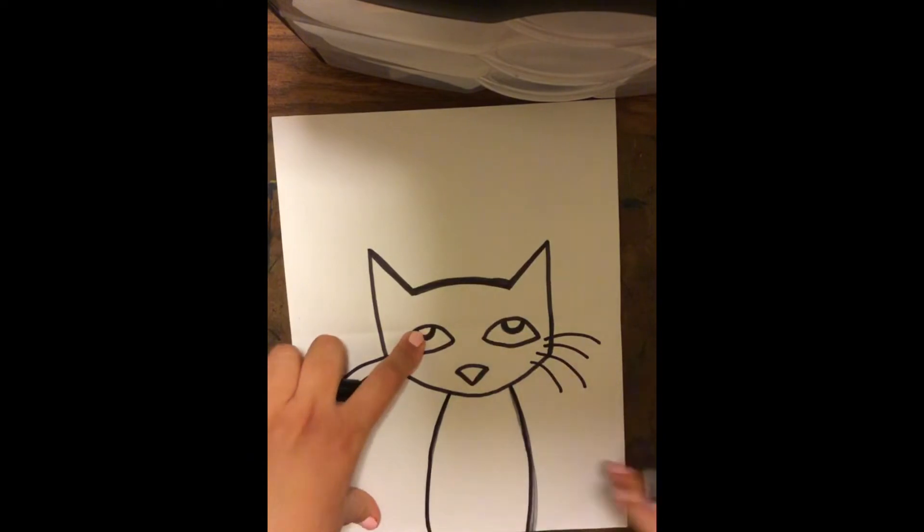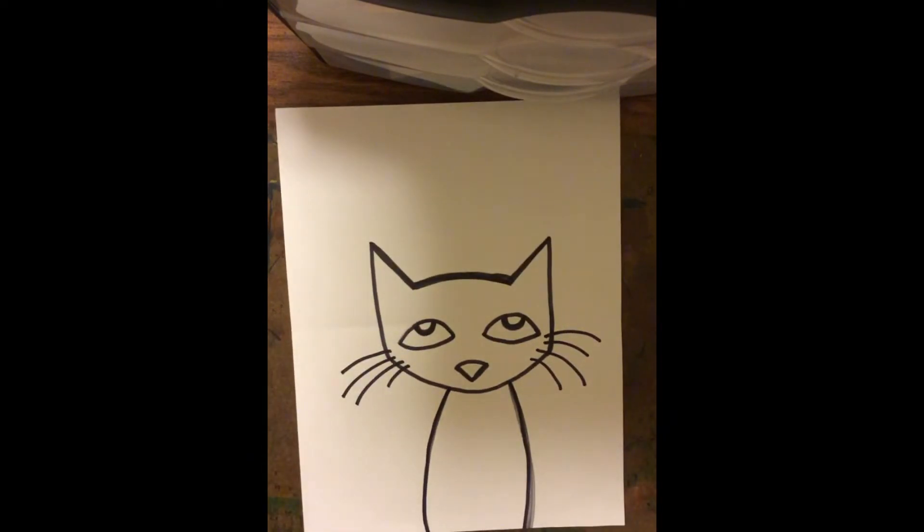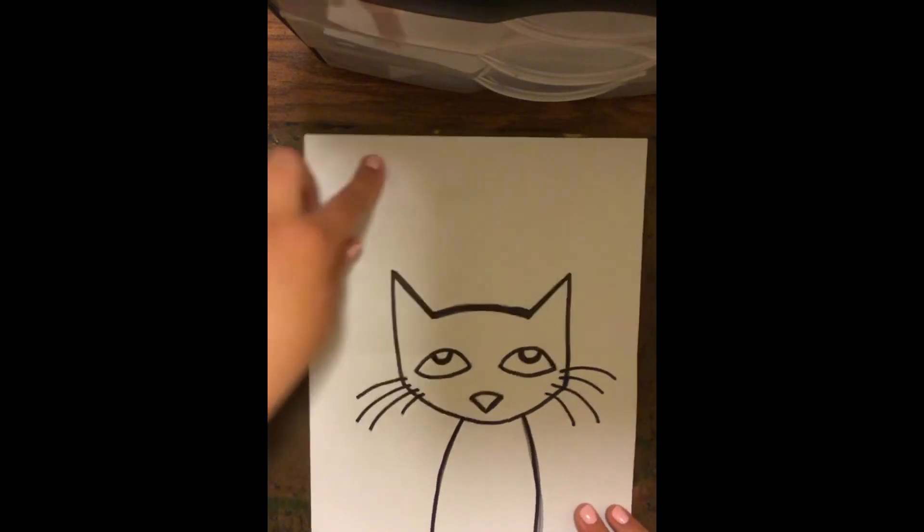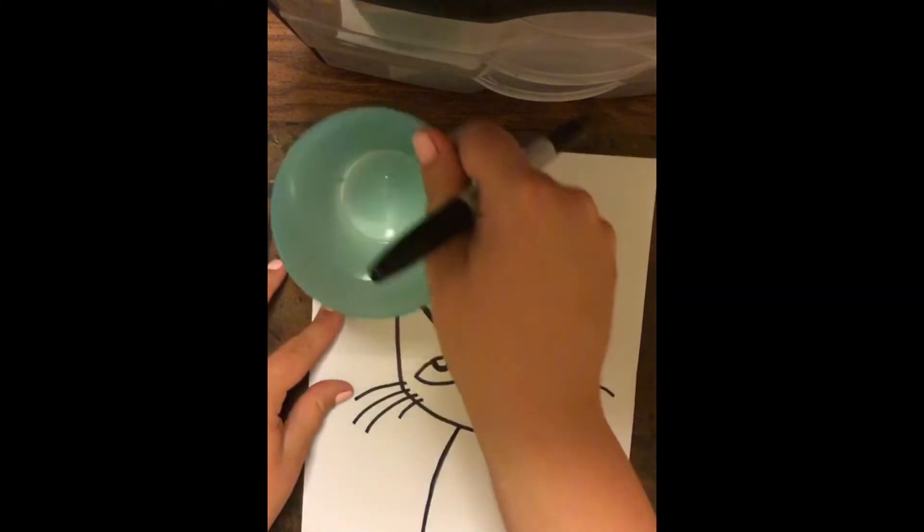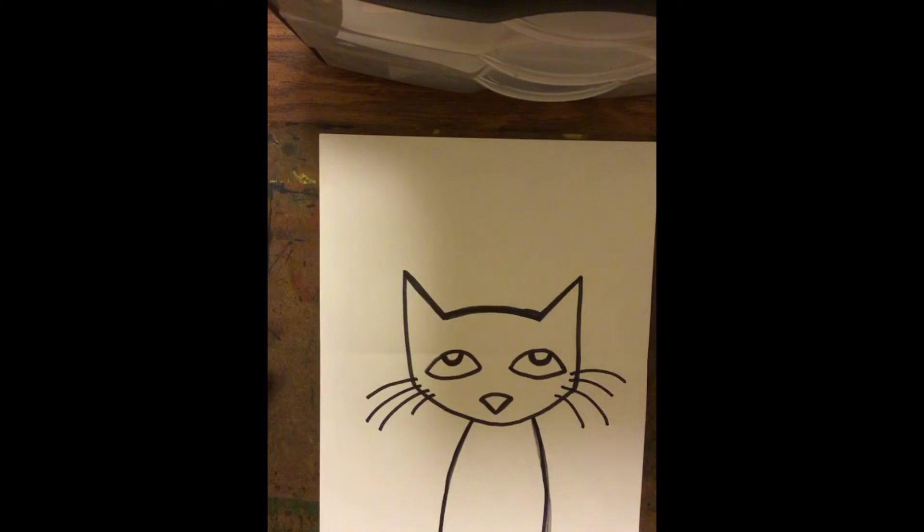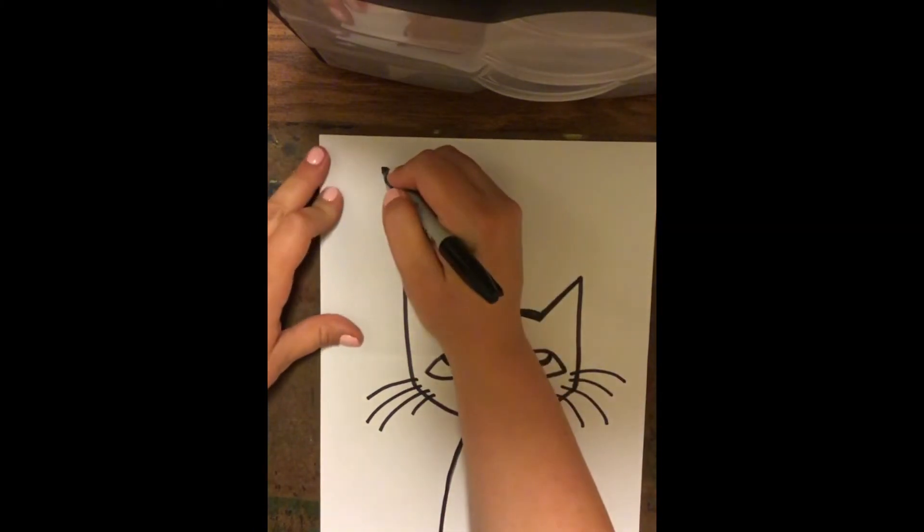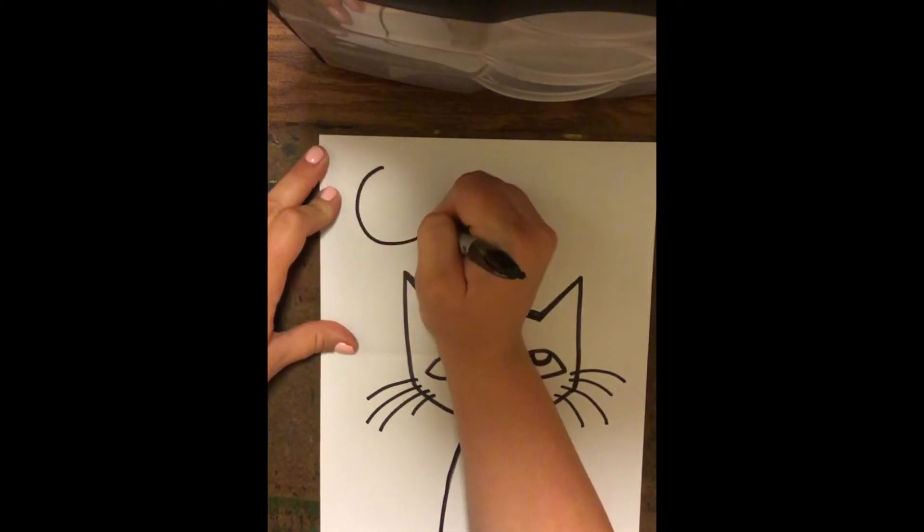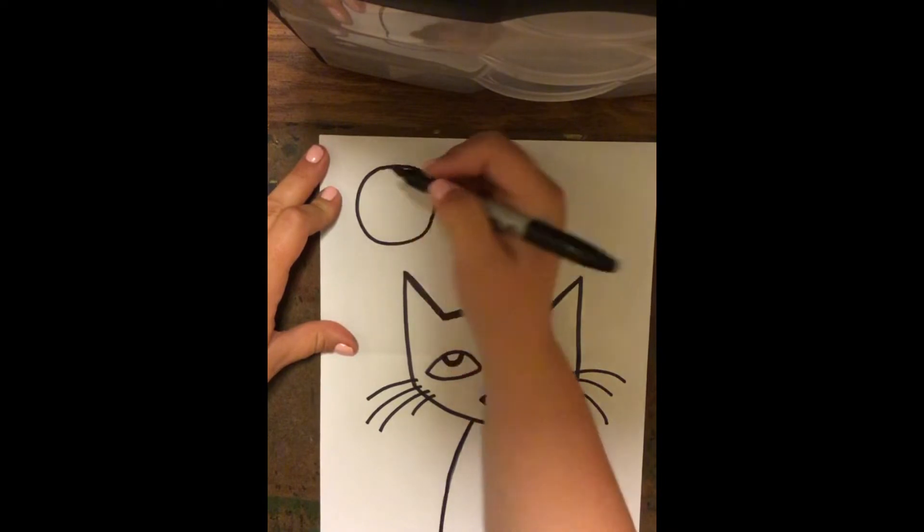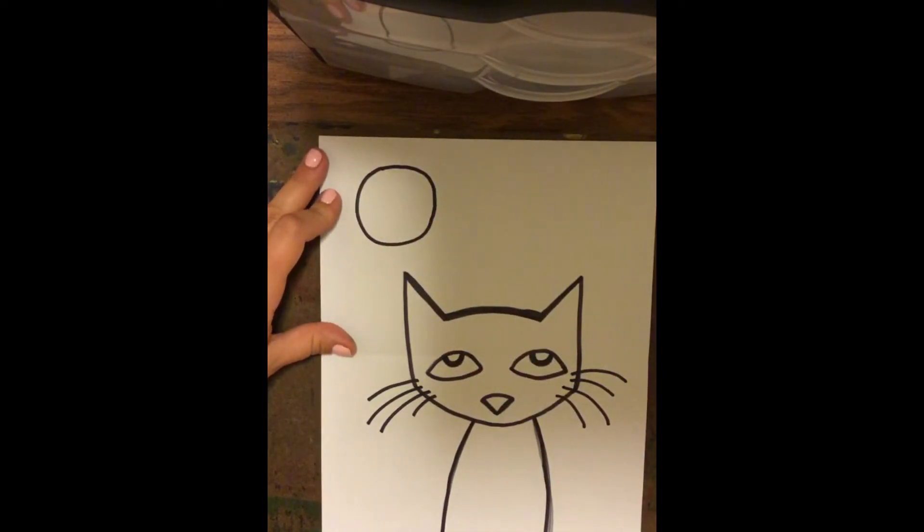We're ready for his background, so I'm going to start out by doing a sun up here in the corner, just like from our book. And if you want, you can use a cup or something if you want it to be a perfect circle. I'm not focusing on perfect. I'm just going to do my best and draw a circle the best I can, just like that.